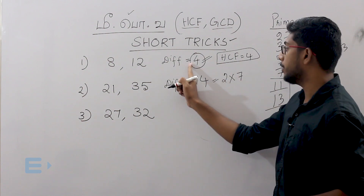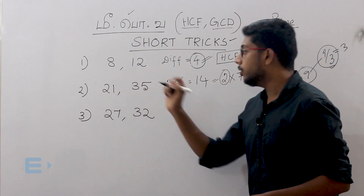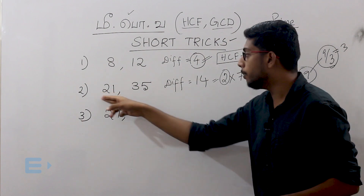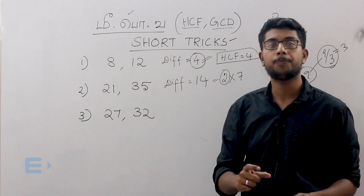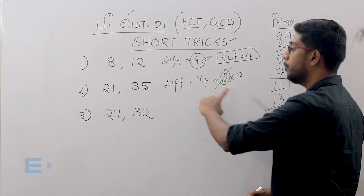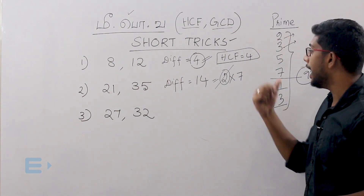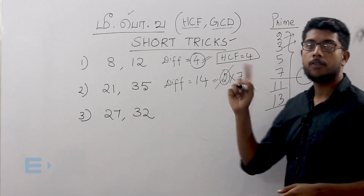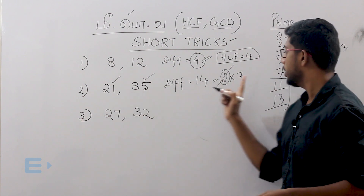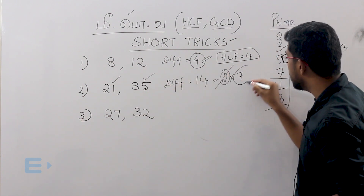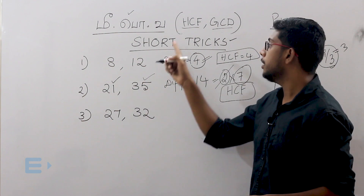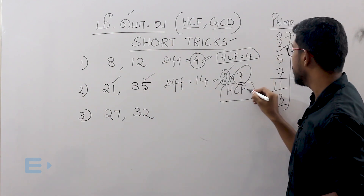Now let's check the first step. 2 divides 21 equally? That means if you want to check everything: 2 divides 21 equals 1 remainder, 35 equals 1, and 25 equals 1. Now let's check the second step. 21 divided by 7 equals 1. 25 divided by 7 equals 1. 7 and 3 equal 1. 7 and 5 equal 1. So HCF is 7.